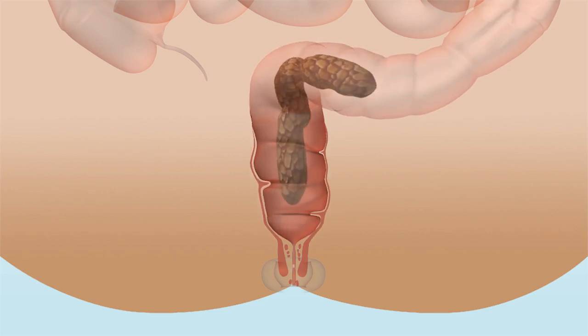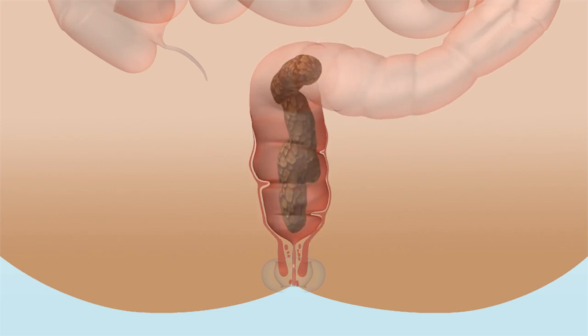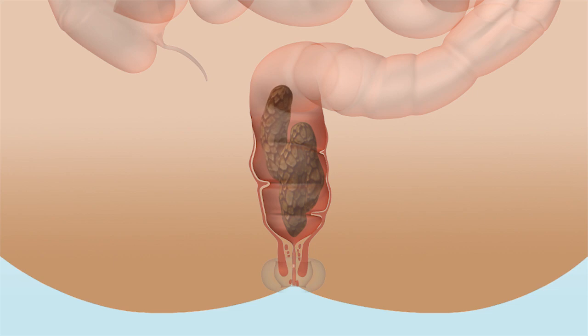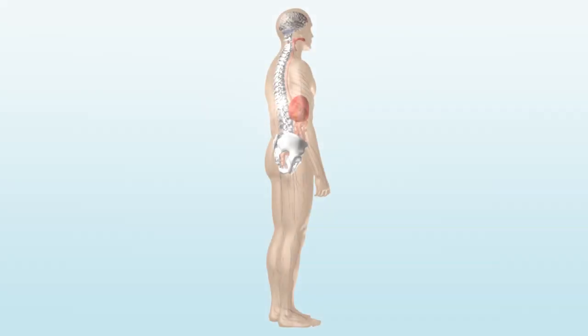When stool fills your rectum, nerve endings register that your bowel wall becomes distended and a signal is sent to your brain, telling you that it's time to find a toilet.